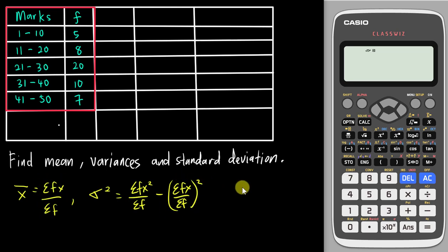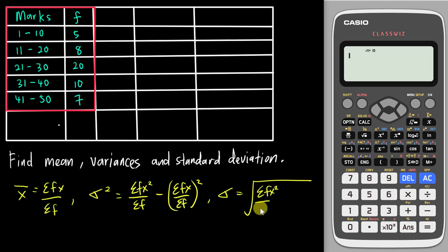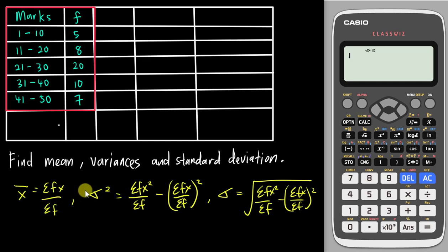Lastly, standard deviation is exactly the same as variance but with a square root applied. So it will be the square root of: sum of fx² over sum of f, minus sum of fx over sum of f, squared. You don't need to worry too much about the formulas because they'll be given in your exam, but here I want to teach you how to differentiate the formulas and how to use them. First, this sign is the summation symbol.